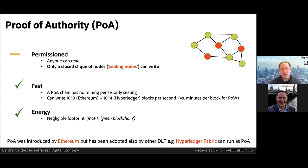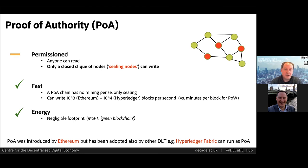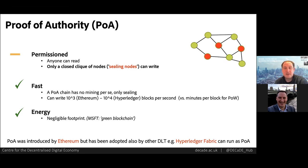In summary, POA — proof of authority — has no mining; it has instead sealing. Everyone can read and there's full transparency on the chain state and history, but only a closed set of sealing nodes can write. The main upside is the lack of mining, which leads to a more scalable system. Usually you can obtain write speeds in the order of thousands of blocks a second depending on implementation — popular ones are Ethereum or Hyperledger Fabric. Consider that versus one block every few minutes for POW. And because there's no mining and the signing process is cheap, there's negligible energy use. Microsoft has a version of this in Azure called Confidential Computing Framework, CCF, and markets it as green blockchain.